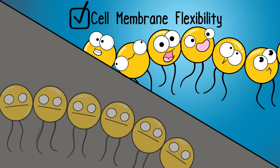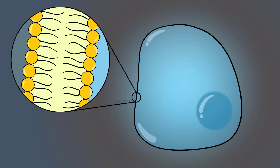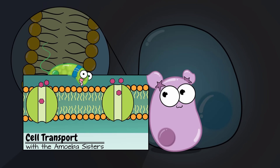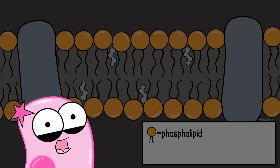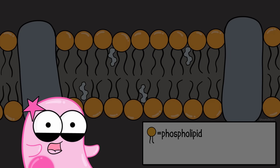Remember that this entire phospholipid bilayer borders the whole cell — it would be a sphere, even though we're just looking at one area of it. We have an entire video that talks about which molecules can go in and out of this membrane and which ones can't, but for now we're going to look at some of the other structures in more depth.